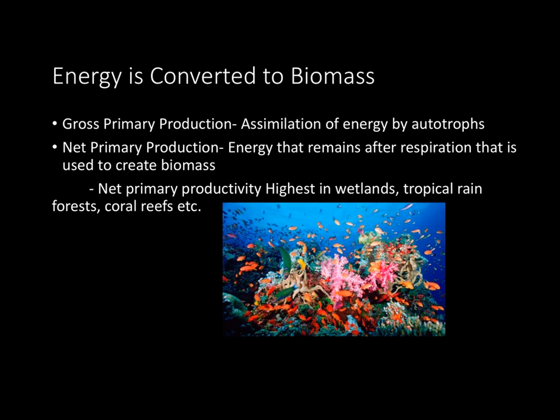Now let's look at the section titled Energy is Converted to Biomass. Gross primary production is essentially the assimilation of energy by autotrophs. Net primary production is basically the energy that remains after respiration that is used to create biomass — the leftover energy that's converted into biomass. Net primary productivity refers to the productivity of certain ecosystems, and the highest productivity ecosystems would be wetlands, tropical rainforests, coral reefs, and things such as that.